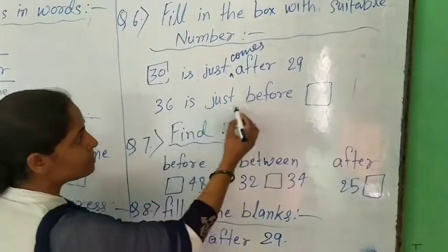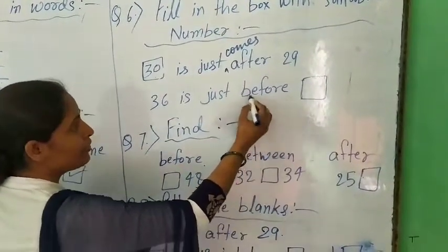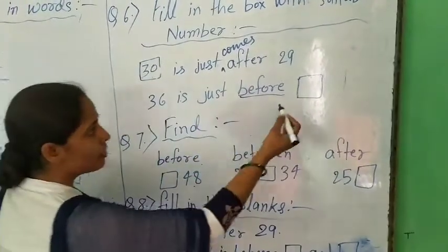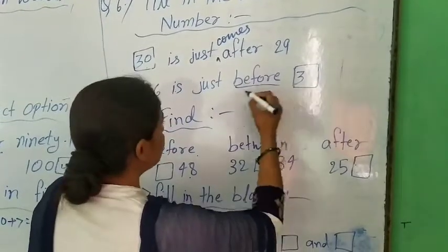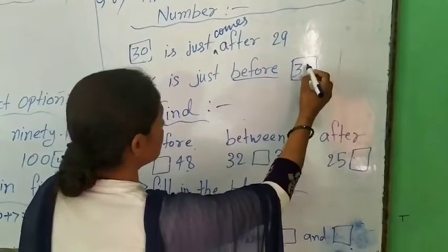36 just before. Before means earlier. 36 just before. 36 just before, 37.